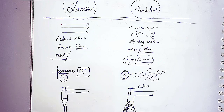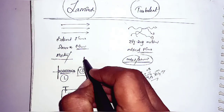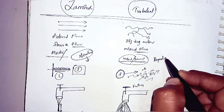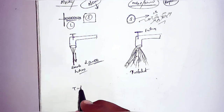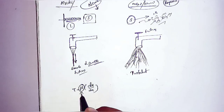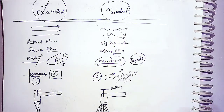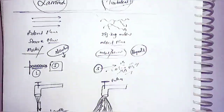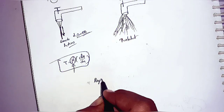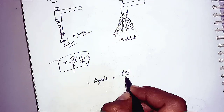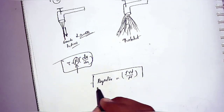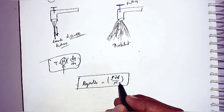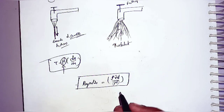For laminar flow, the associated scientist is Newton, and the governing law is Newton's law of viscosity: τ = μ (du/dy), which purely depends on viscosity. For turbulent flow, the associated scientist is Reynolds. Reynolds conducted experiments on turbulent flow and developed the Reynolds number, a non-dimensional number: Re = ρVD/μ, where ρ is fluid density, V is average velocity, D is pipe diameter, and μ is viscosity.